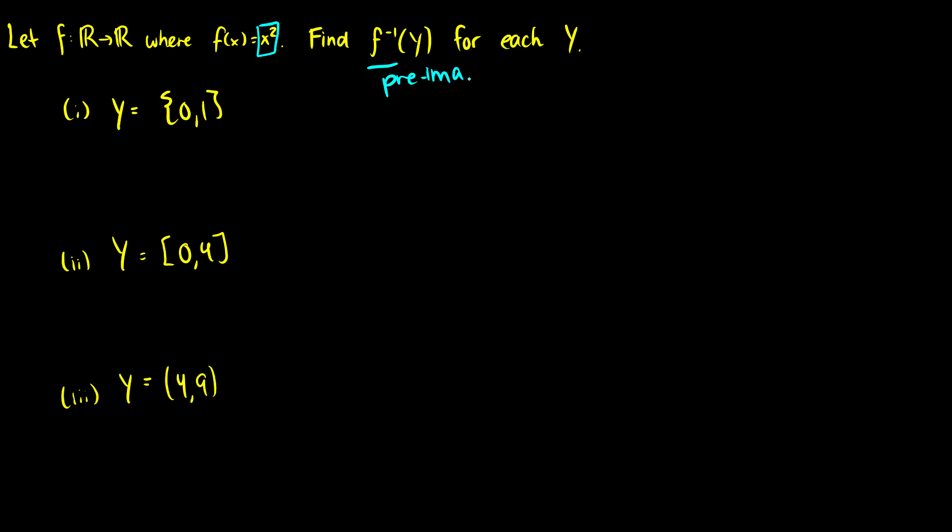So the pre-image is going to be a set or interval. It is not going to be an element on its own. So I'm asking for everything that maps to the set Y using the function f(x) = x². So the first example, if we have Y equal to the set {0, 1}, I'm asking what values give x² = 0 and x² = 1?